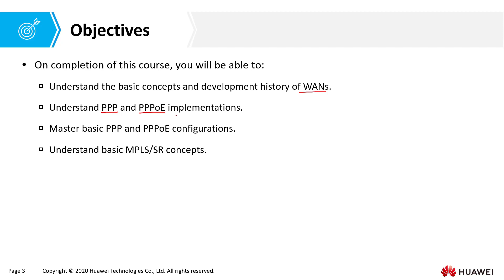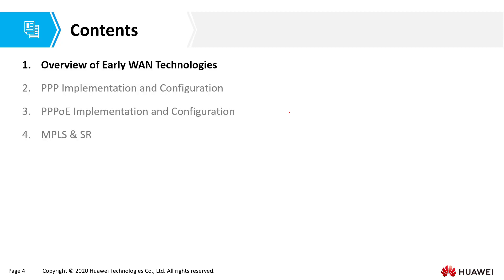We'll also talk about MPLS and segment routing concepts and how they come into play. I'm going to break down this chapter into four components: an overview of wide area network technologies, point-to-point protocol implementation and configuration, point-to-point protocol over Ethernet implementation and configuration, and finally multi-protocol label switching and segment routing.